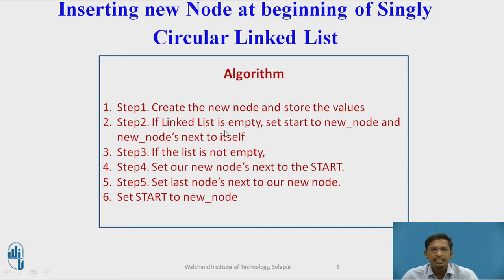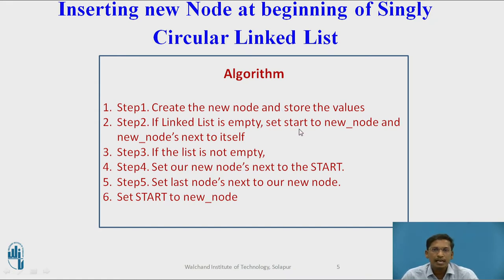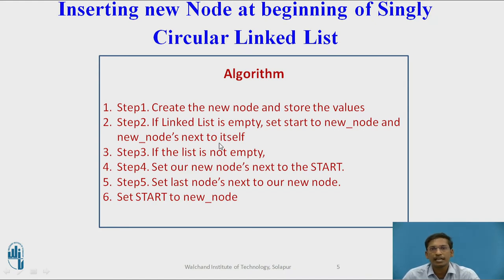Step two: check whether the linked list is empty or not. If it is empty, set start to point to the new node, since there is only one node. The new node's next pointer will point to itself, as it must always hold the address of the first node.